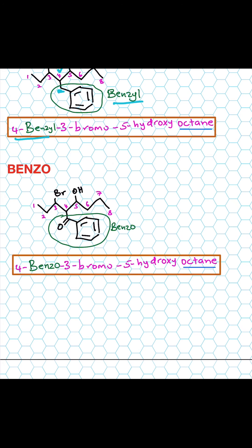The last one is benzo — B-E-N-Z-O. That's when you have the benzene ring and the carbonyl, so carbon double bond oxygen, as a side group. So it becomes four-benzoyl, three-bromo, five-hydroxy octane.